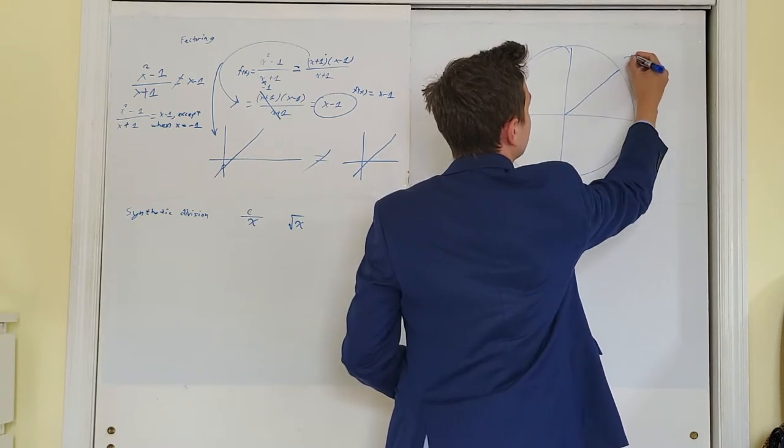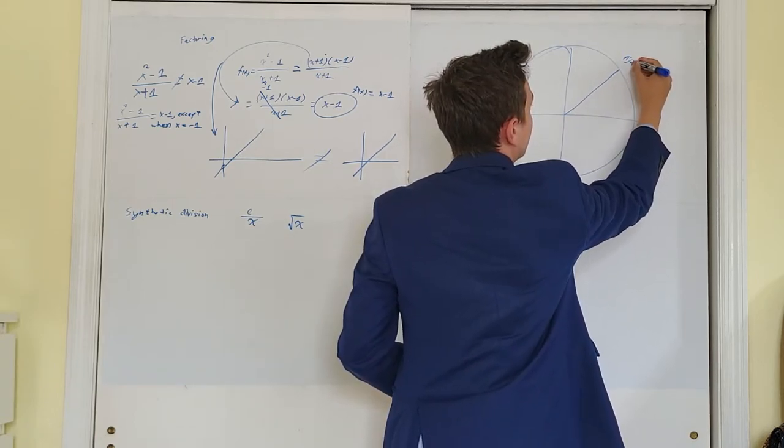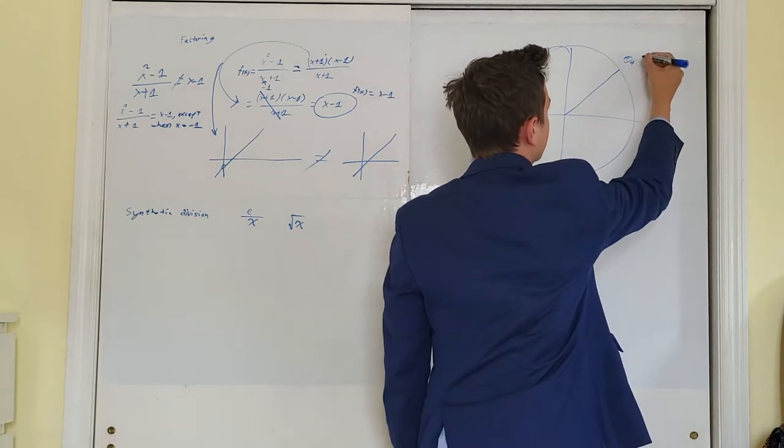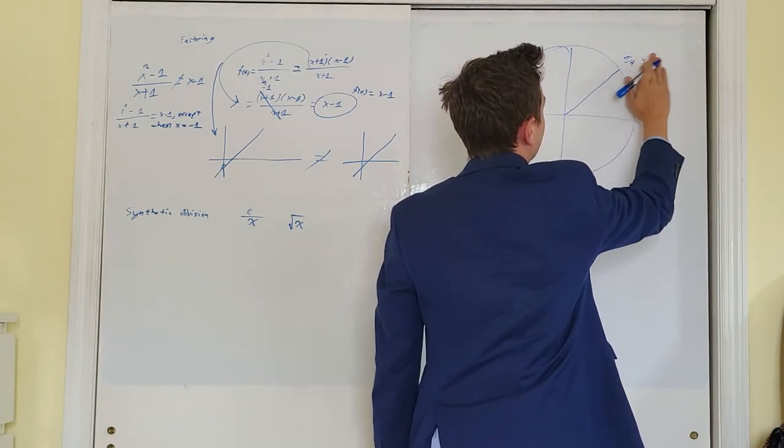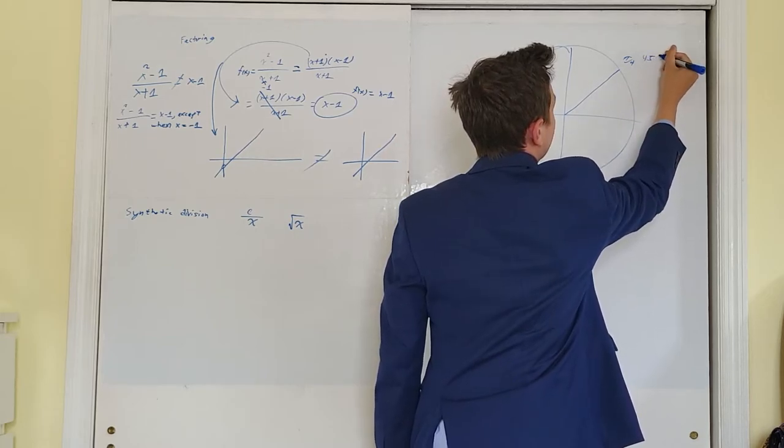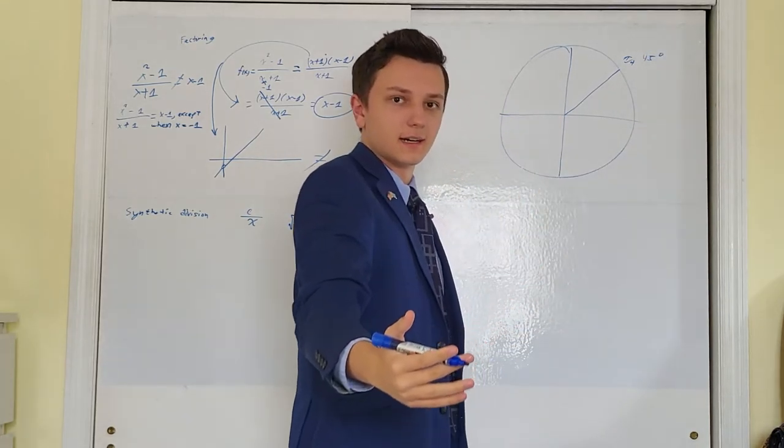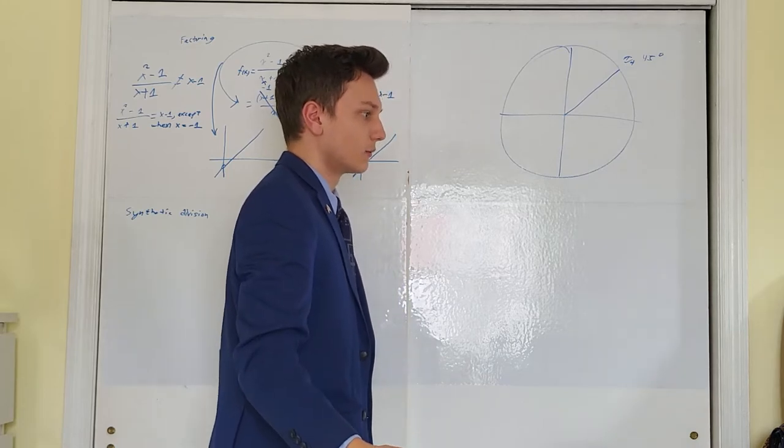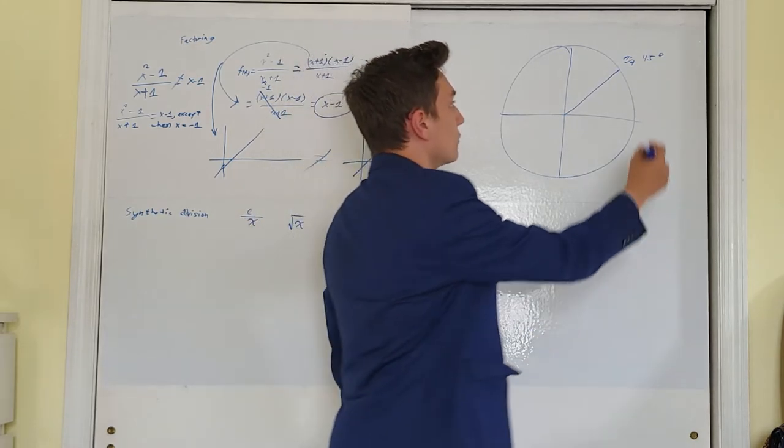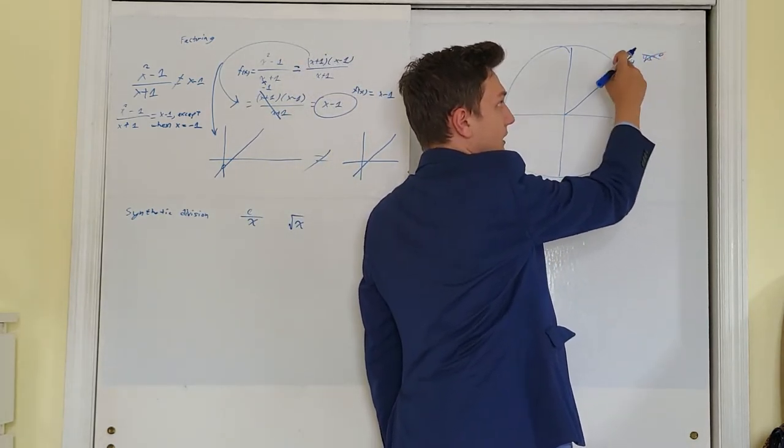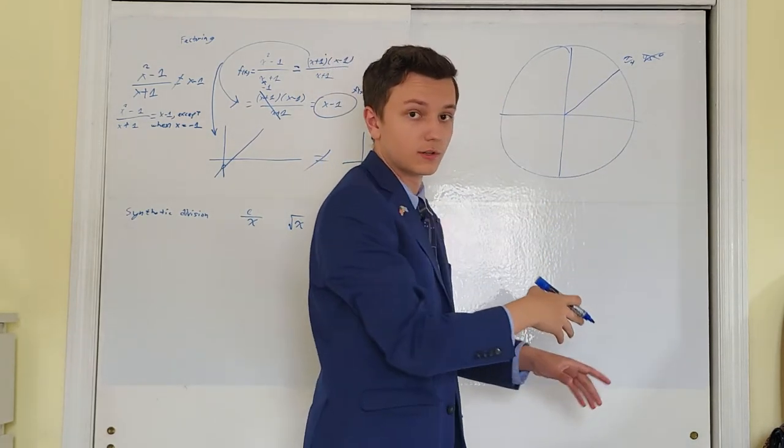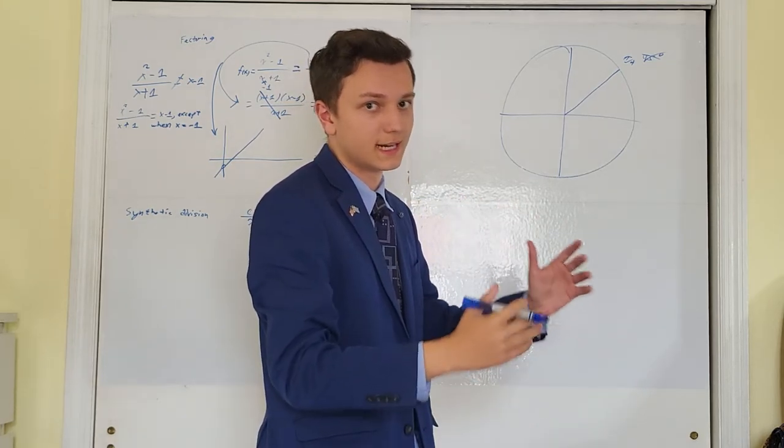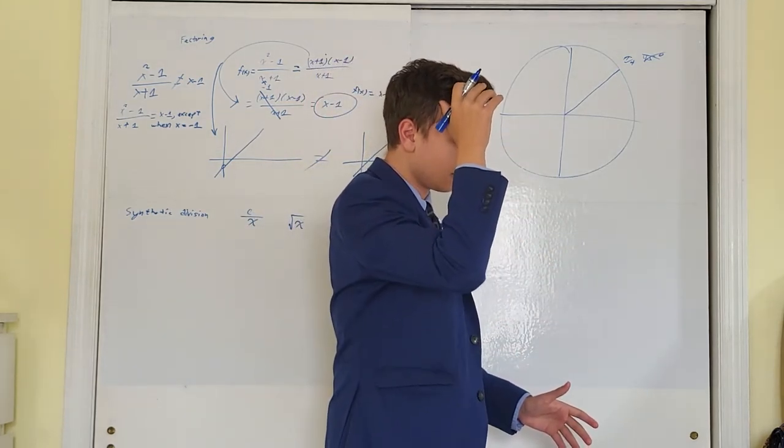You know, if we come here to pi over four radians, some of you like to call it 45 degrees. That's another thing that you guys need to become familiar with in calculus. We almost never deal with degrees. You need to convert everything into radians. So you need to be proficient with radians. If you learn the entire unit circle in degrees, you're going to have to relearn the entire thing in radians.